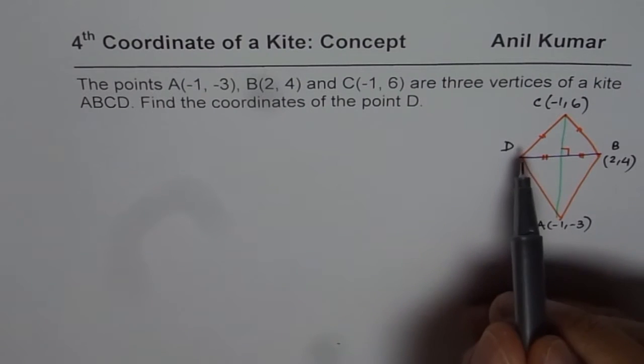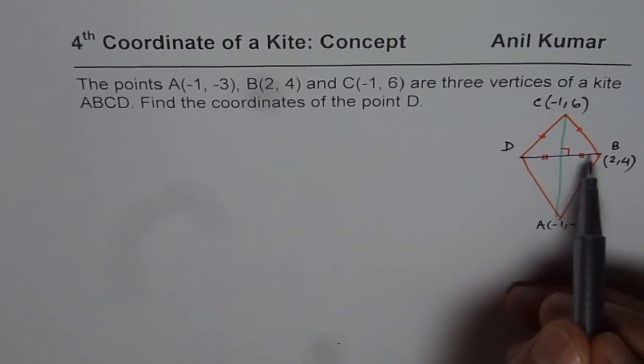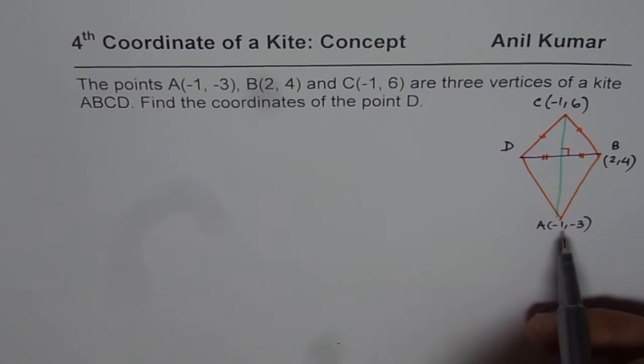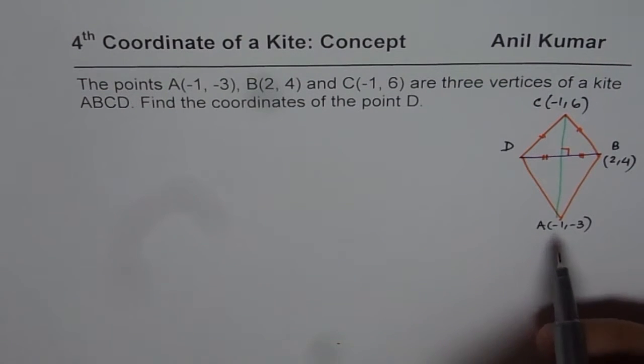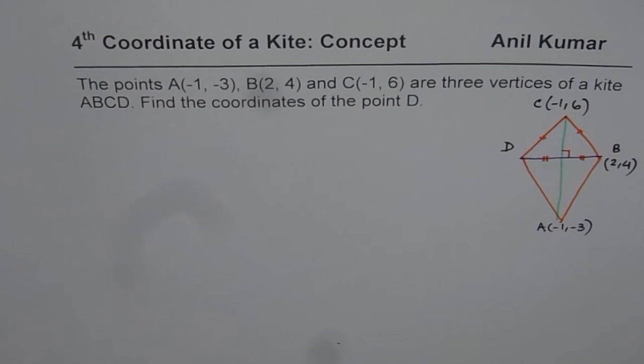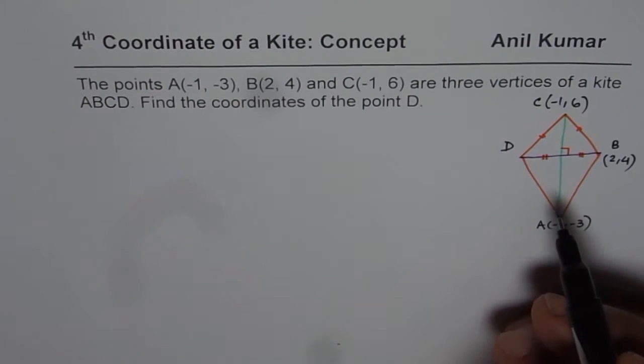The concept here is you need to find slope of the two diagonals, and these slopes should be at right angle. That is the first thing. Second, the points B and D are kind of mirror images on one of the diagonals.